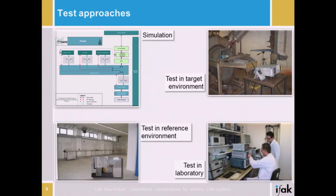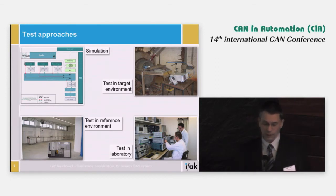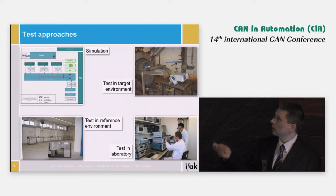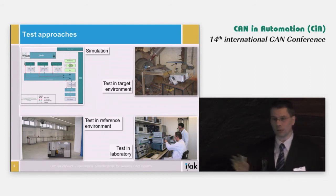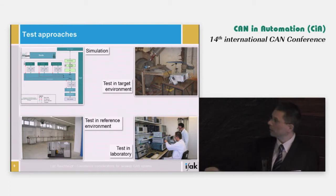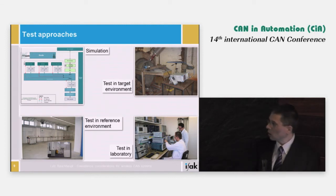Taking this approach, there are different possibilities to make such tests. Of course, you can make simulations if you have a model of the wireless system or devices. Another approach is to go into the target environment, which is an industrial environment. The disadvantage is that you will not have the environment under control for a long time. Therefore, another approach is to take a test environment with industrial-like propagation conditions, or what we have done — make these tests in a laboratory.